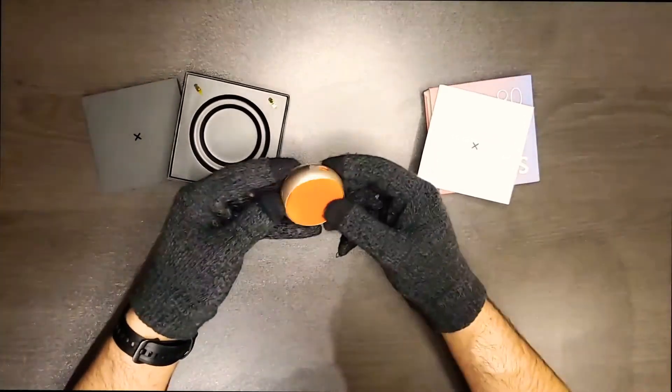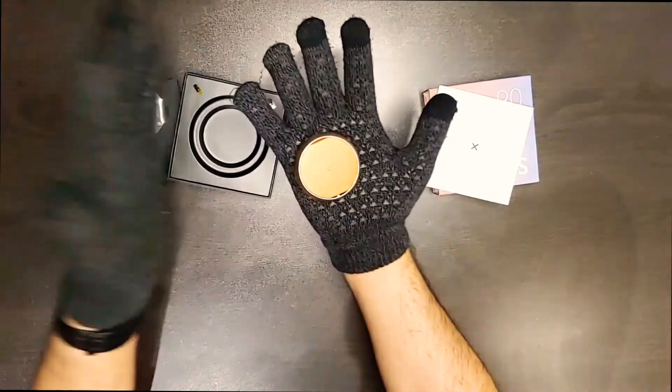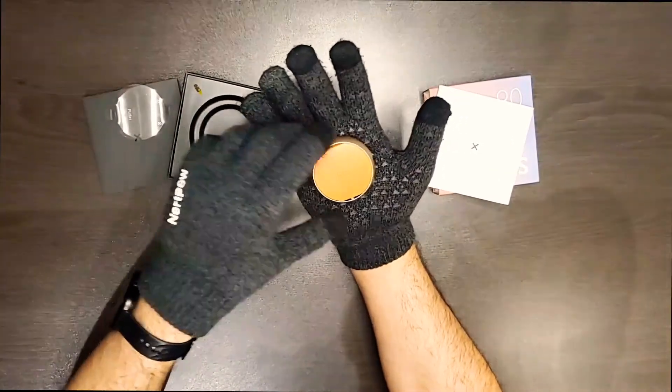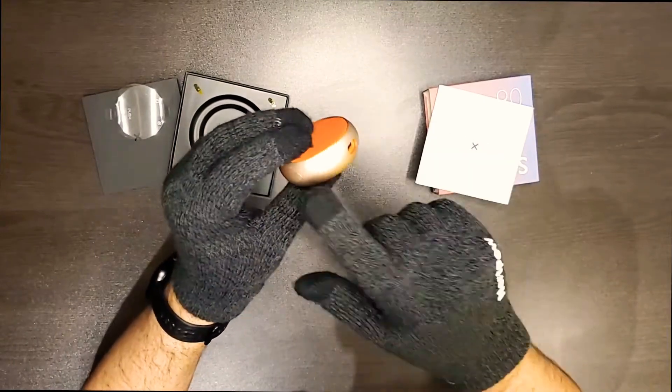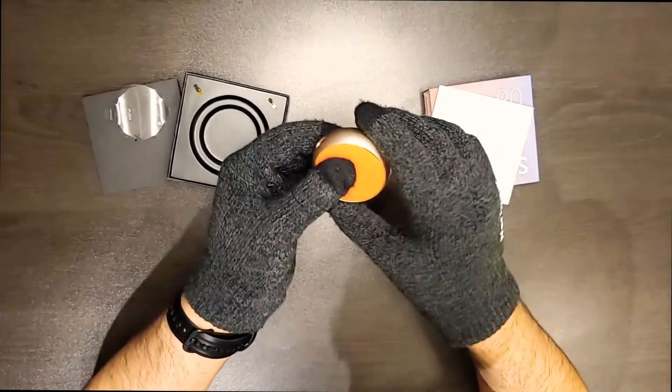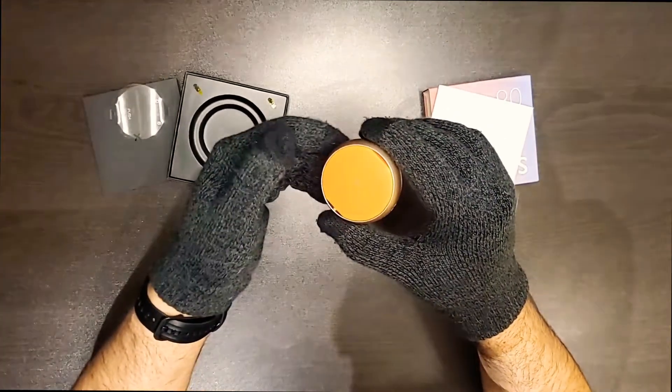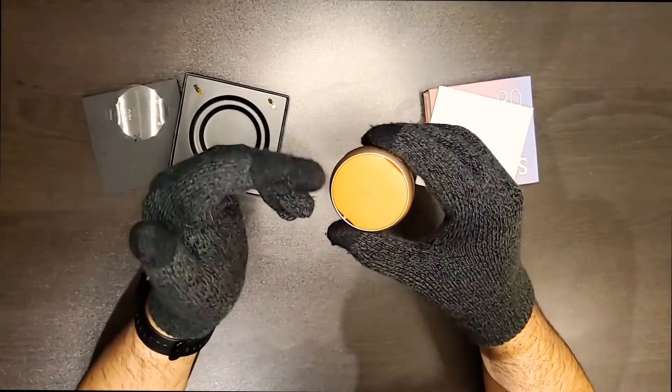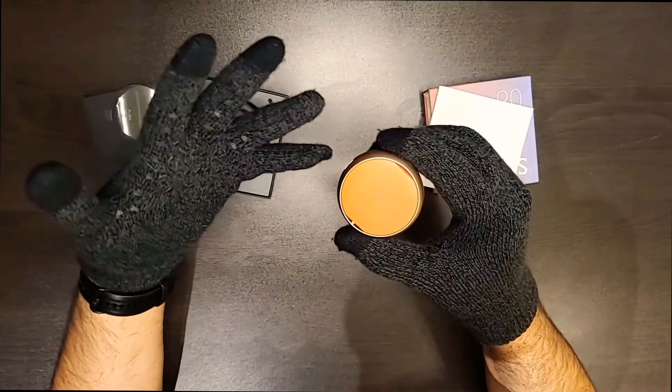So this is the earbud itself and you can see here it's very tiny. It's very tiny and it just looks very unique. I love the golden circular design around the orange color. The green one is also very nice, very outstanding, but the orange is more outspoken, if I may.